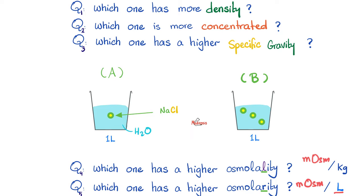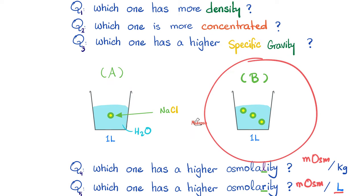The answer to all of these questions is choice B. B has more density — more mass over the same volume. B is heavier because it has more sodium chloride. B is more concentrated. Specific gravity is the density of that liquid relative to water — B is more dense, it has more mass. B has the higher osmolality, which is osmoles per kilogram. B also has higher osmolarity. It has more particles, therefore more osmolality or osmolarity.